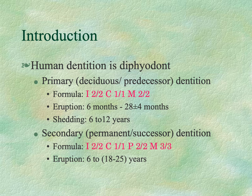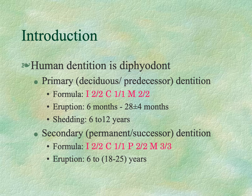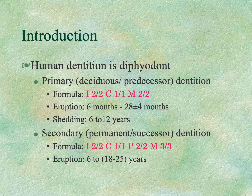As we have earlier discussed, human dentition is diphyodont, meaning we have a primary dentition — also called deciduous or predecessor dentition — which starts to erupt around six months old and finishes erupting at around 28 plus or minus four months. It sheds starting from age six until age 12. The secondary, or permanent, dentition erupts starting from age six until age 18, and sometimes the third molar is delayed and can erupt until age 25.